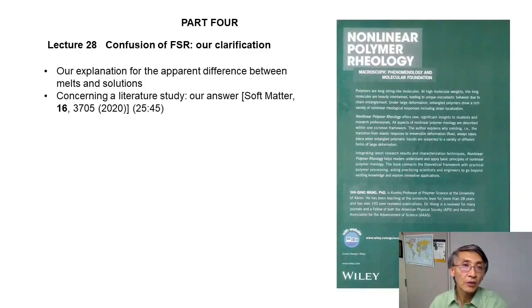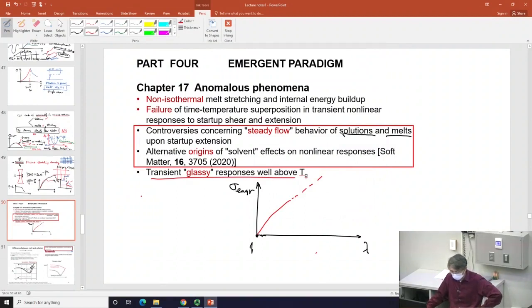This is Lecture 28. We are going to accomplish one thing: to further clarify the confusion about some data using FSR. I will first explain what we think is the difference between melt and solution, and then I will update by discussing a literature result using our new experiments. Let's continue on what we started last time, focusing on explaining more about this confusion about whether there are differences between solutions and melts in extension.